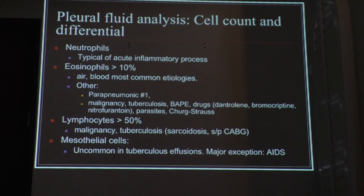Other things to think about: if the eosinophils are greater than 10%, you think about malignancy, drugs that can actually cause this, parasites, Churg-Strauss — remember the vasculitis that we talk about, which we don't call Churg-Strauss anymore.